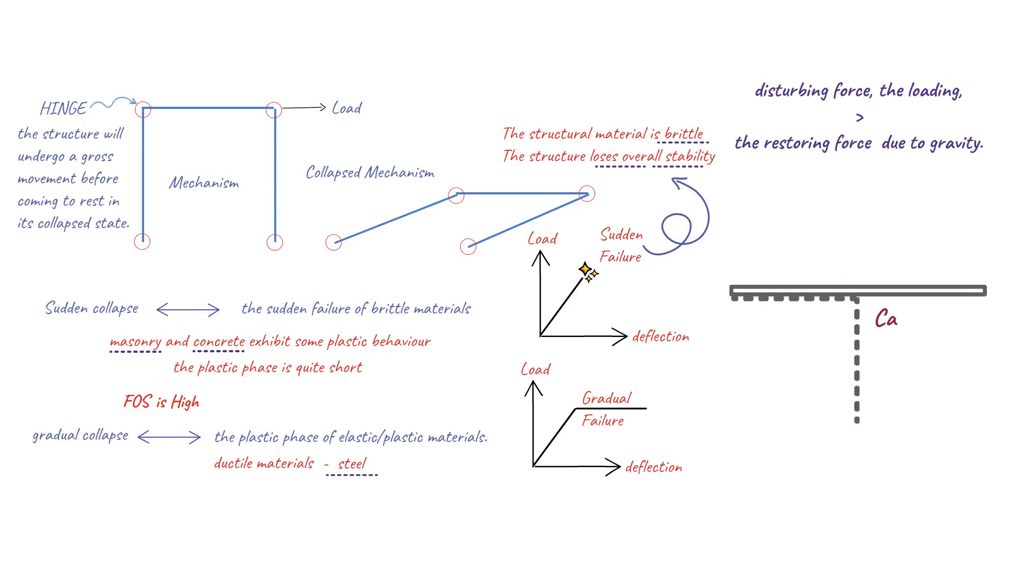Suppose a cantilever structure is anchored by a counterweight. Gravity acting on the counterweight causes a force that can balance loads on the cantilever. If the load is increased until the disturbing force exceeds the restoring force, the cantilever structure will tip, becoming a mechanism and collapse.